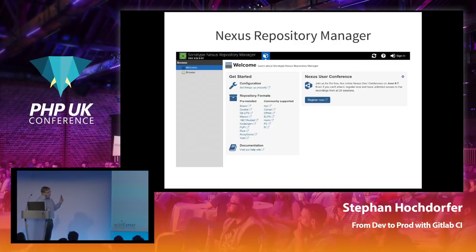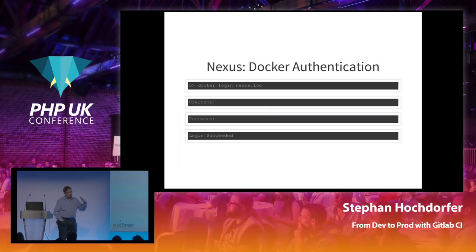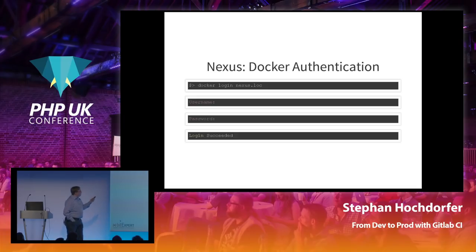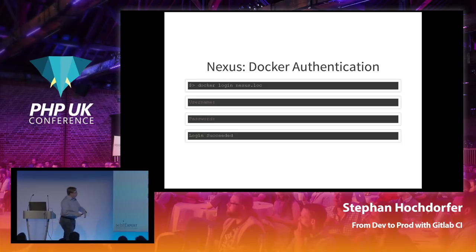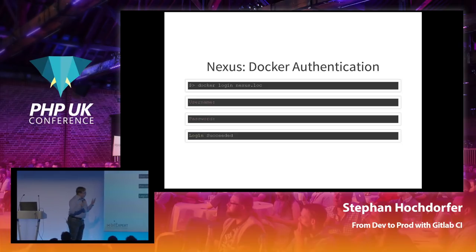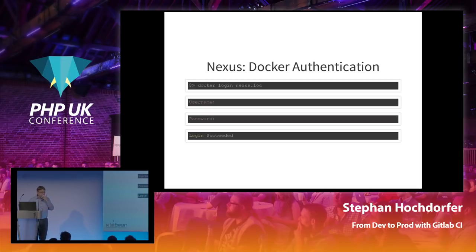An important part of the whole process is that GitLab needs to authenticate against Nexus — the same applies if you use GitLab's built-in registry. At some point you need to log in to the registry, provide a username and password, and then you're able to pull and push images. Depending on your setup, you can do this once on the host or during each build.